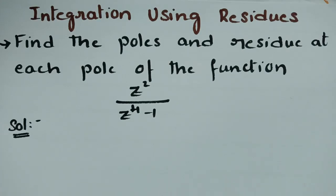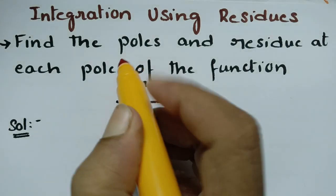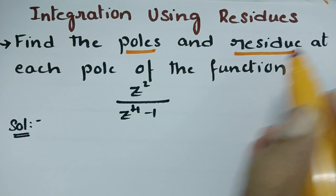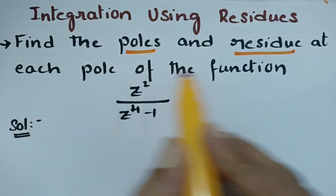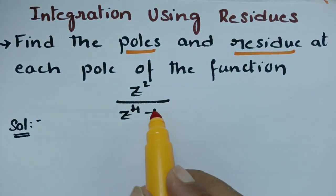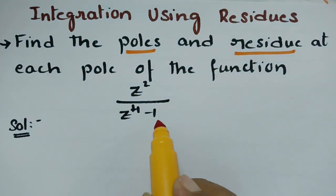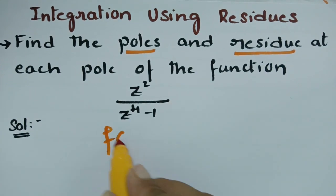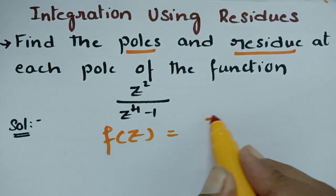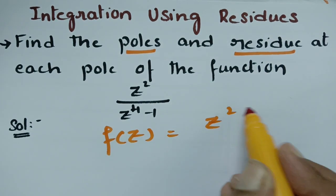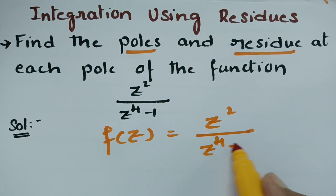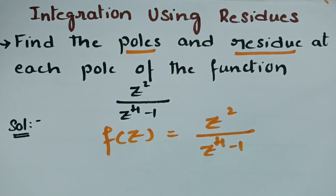This video is on integration using residues. We have to find the poles and the residues at each pole of the function f(z) = z² / (z⁴ - 1).